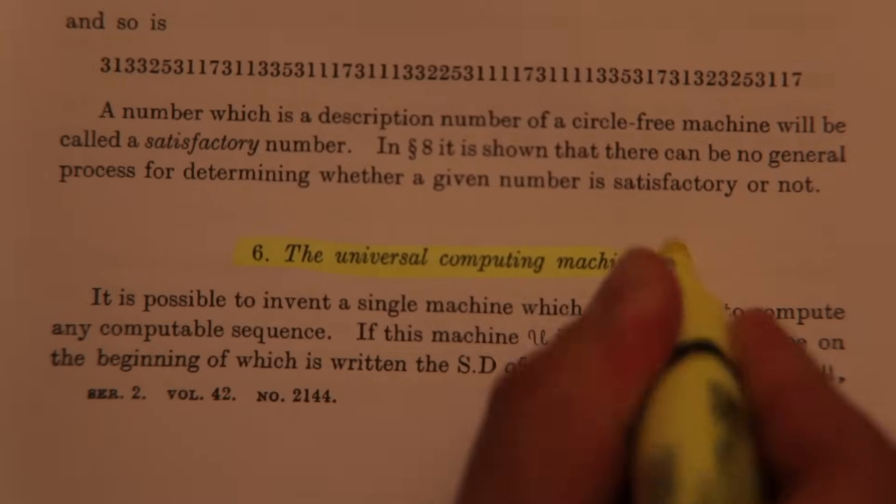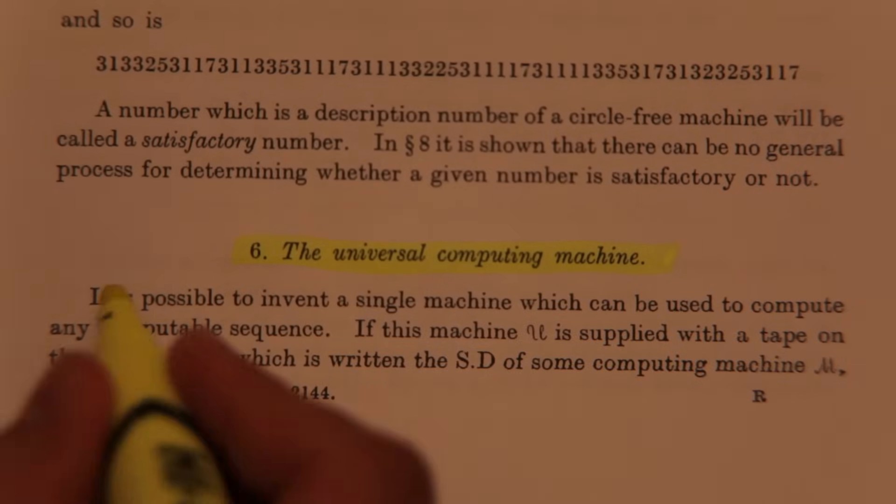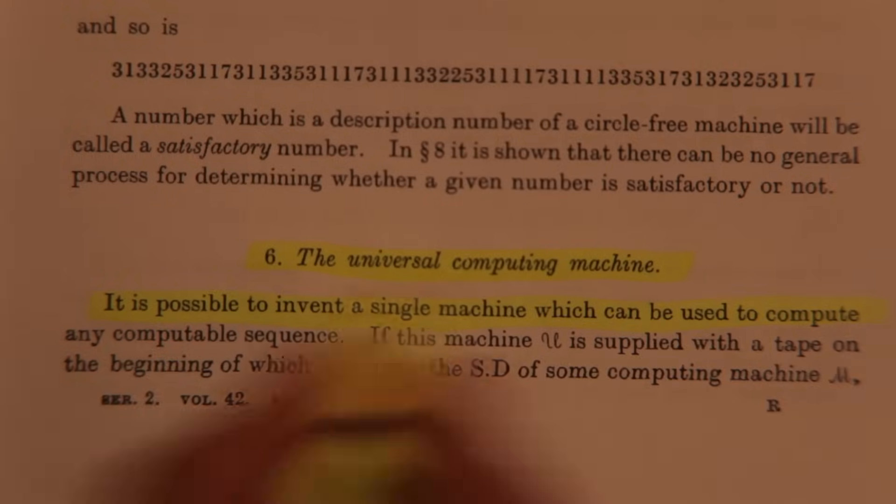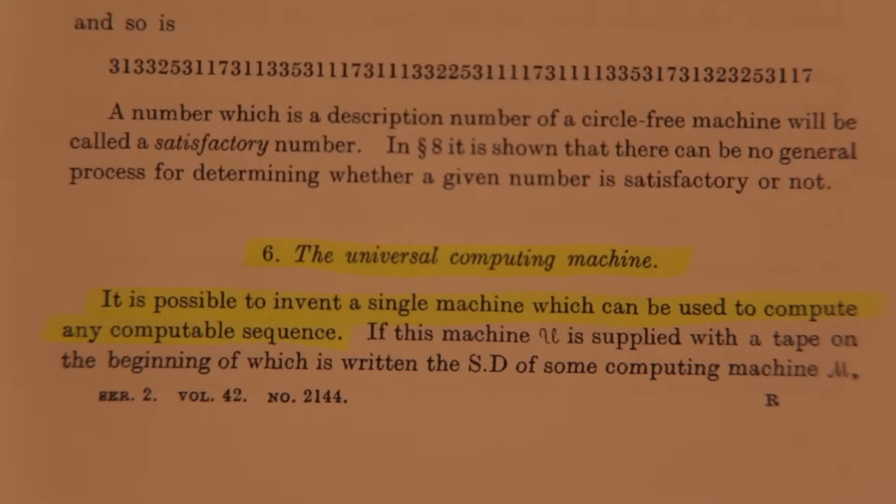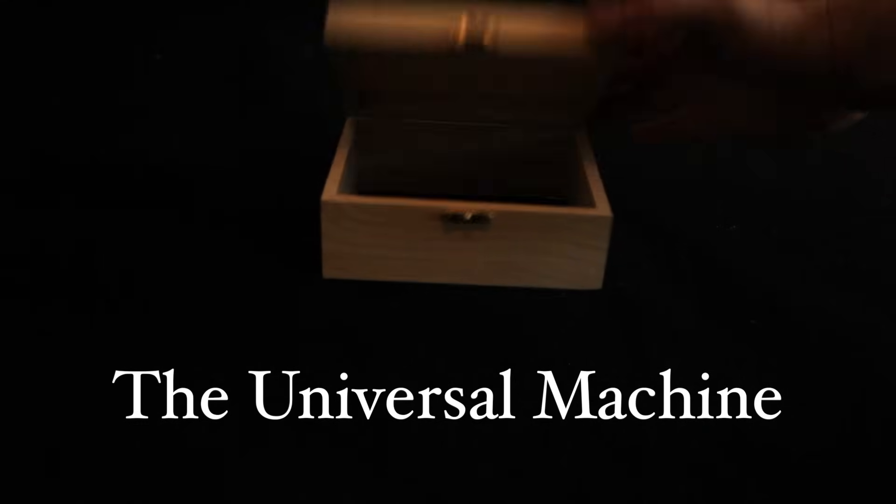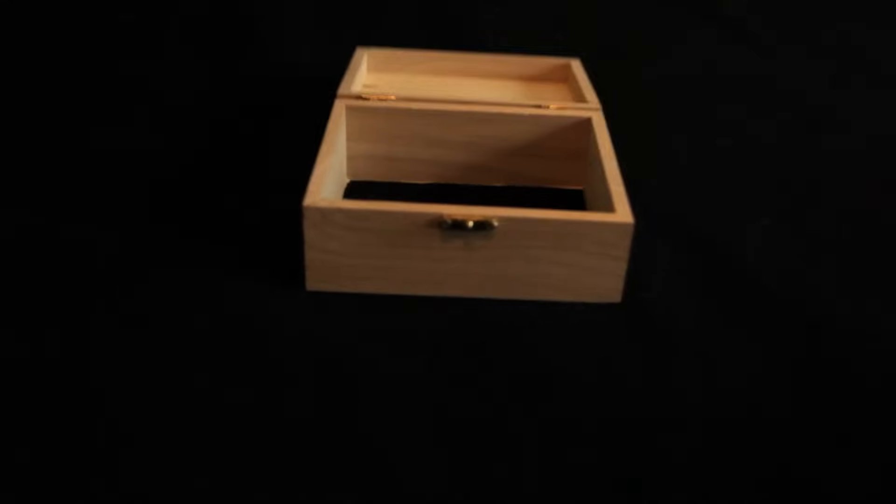In it, he imagines a machine that can do anything any other machine might do, known as a universal machine. And he begins by imagining a machine as a human in a box, with a pencil and a stack of paper.